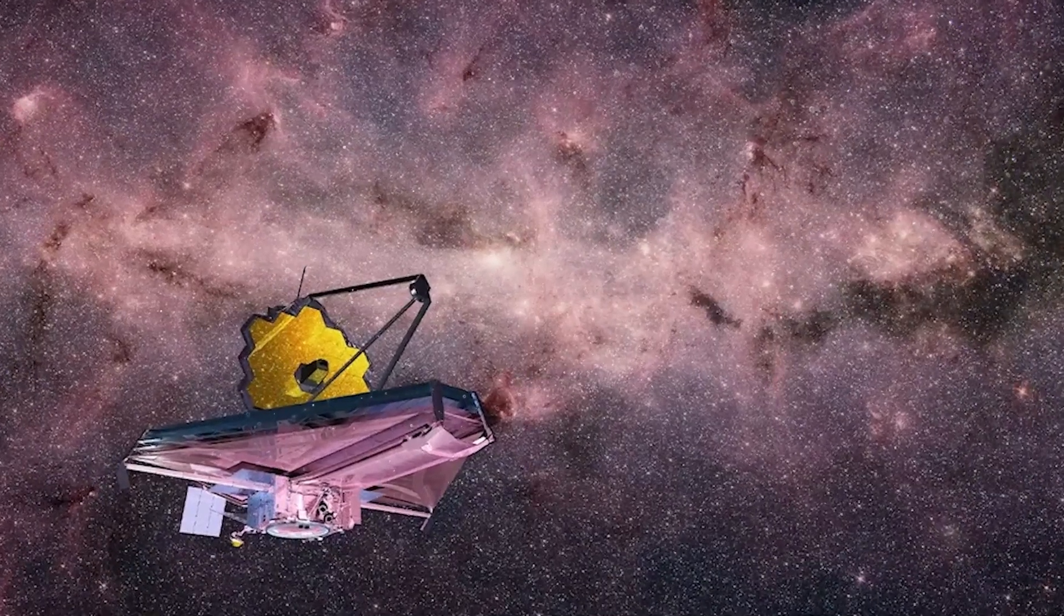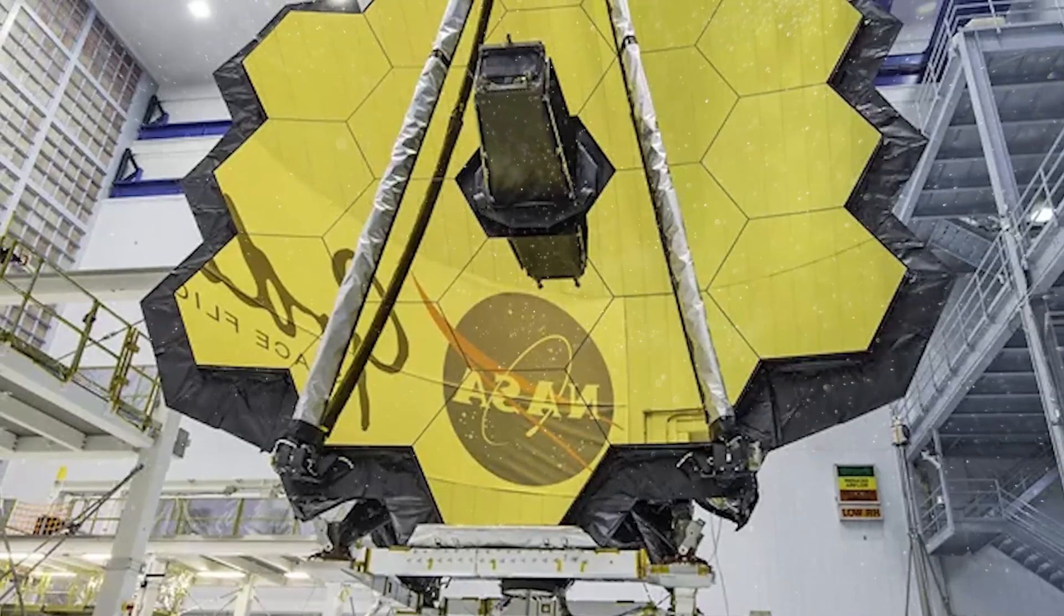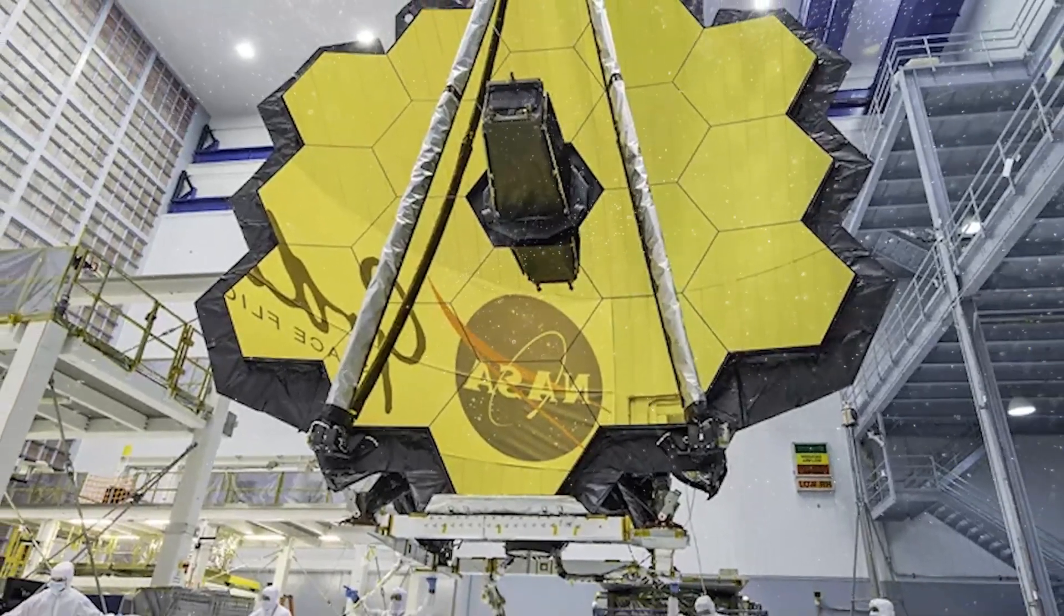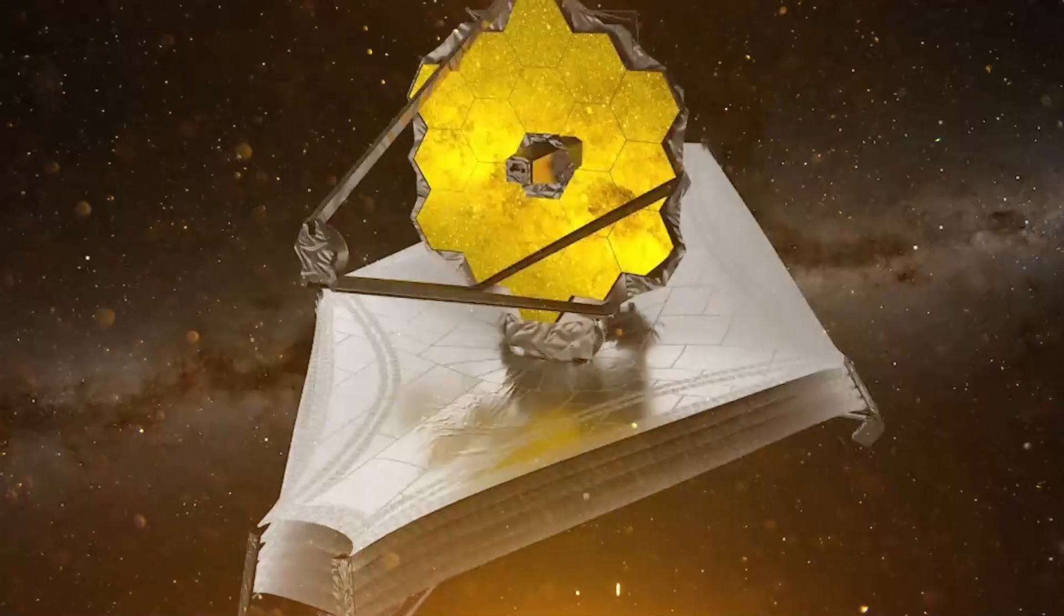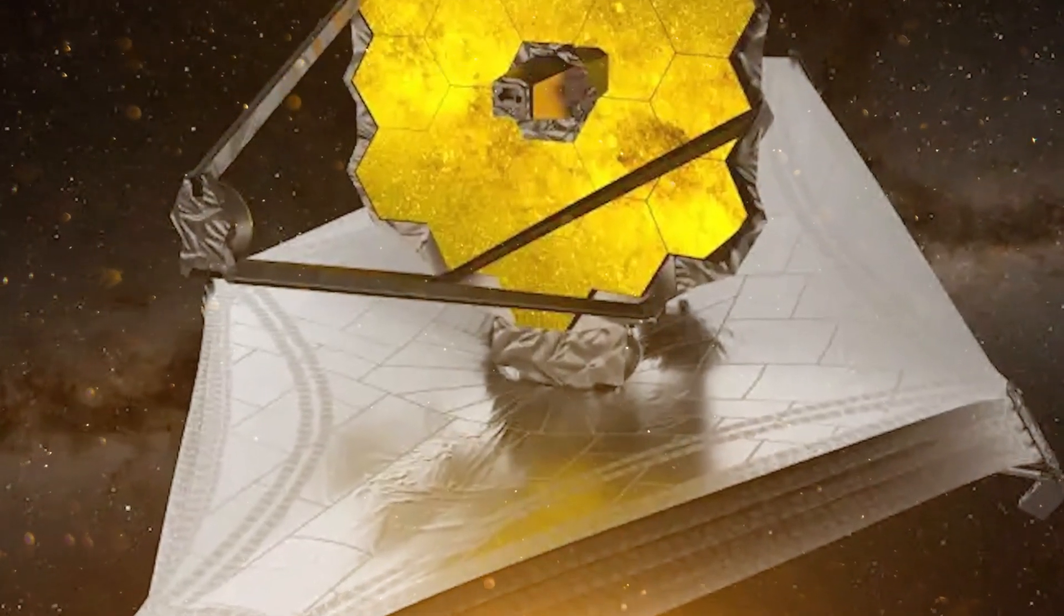This is where the James Webb Space Telescope comes into the picture. Webb has a superpower: its sharp infrared vision. With its large mirror and sensitive optics, it can easily separate the light from Cepheid stars from the light of nearby stars with minimal blending.